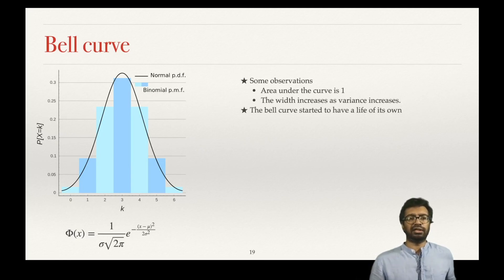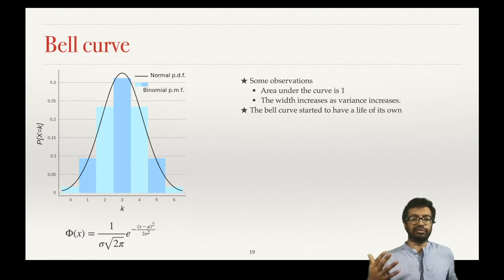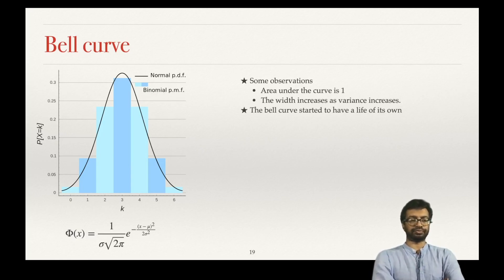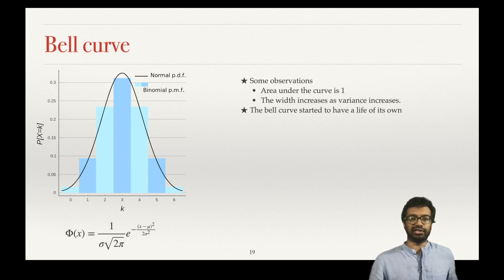Why is this bell curve so important? Once De Moivre showed the application of the bell curve — that you can approximate the binomial distribution — it became useful. It is clearly much more easier to calculate using the equation of the bell curve rather than using the binomial distribution when you have large numbers.